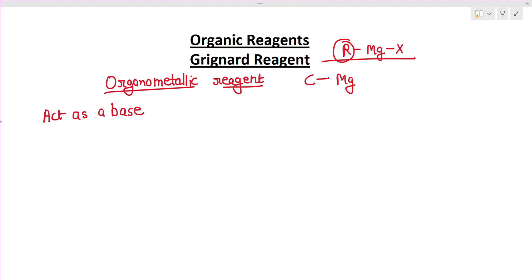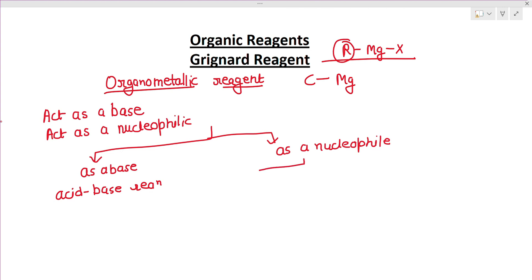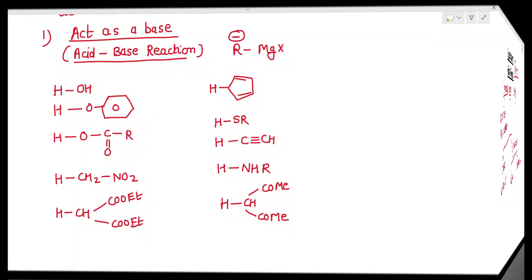The Grignard reagent can act as a base or as a nucleophile, so it undergoes basically two types of reactions. The first type is when it acts as a base — acid-base type reactions. The second type is when it acts as a nucleophile, which can further be divided into addition reactions and substitution reactions.